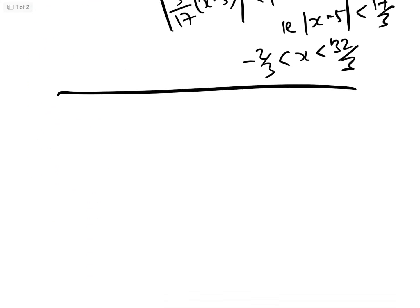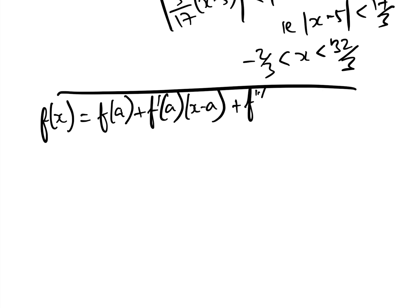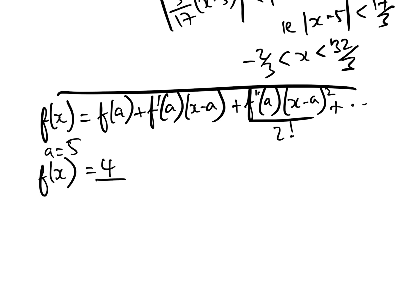Let's look at the Taylor series expansion. We have f(x) equals f(a) plus f'(a)(x minus a) plus f''(a)(x minus a) squared over 2 factorial, and so on. Since we want to expand around the point x equals 5, we let a equal 5. Our function is f(x) equals 4 over 3x plus 2. We'll use the ratio test — that a(n+1) over a(n) must be less than 1 — but first we need to find the general term a(n) by computing some derivatives.